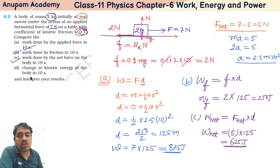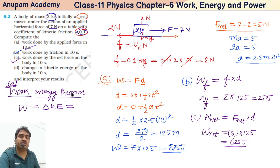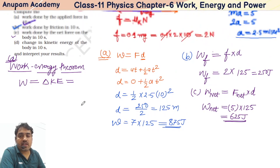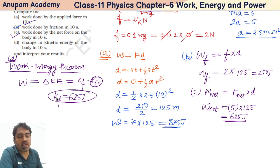Part D: the change in kinetic energy of the body in 10 seconds. We can use here work-energy theorem. Work-energy theorem says that the work done by all forces equals change in kinetic energy. This change in kinetic energy equals KE final minus KE initial. The initial kinetic energy is zero, so final kinetic energy equals work done, which is 625 Joules.